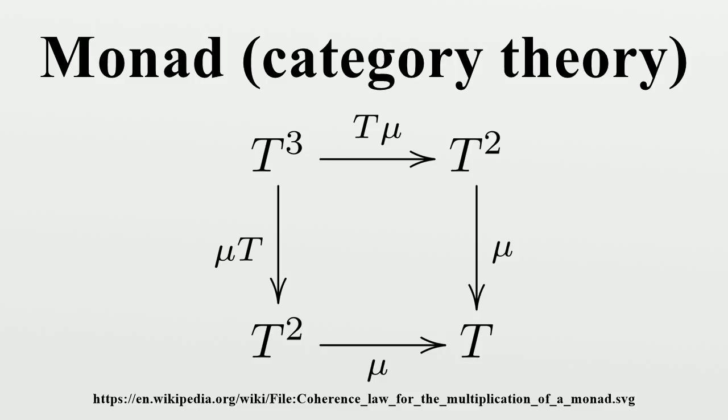Monads and adjunctions: An adjunction (F, G, η, ε) between two categories C and D always defines a monad. Conversely, it is interesting to consider the adjunctions which define a given monad this way. Let Adj(C, T) be the category whose objects are the adjunctions (F, G, η, ε) such that (GF, η, GεF) = T and whose arrows are the morphisms of adjunctions which are the identity on C.